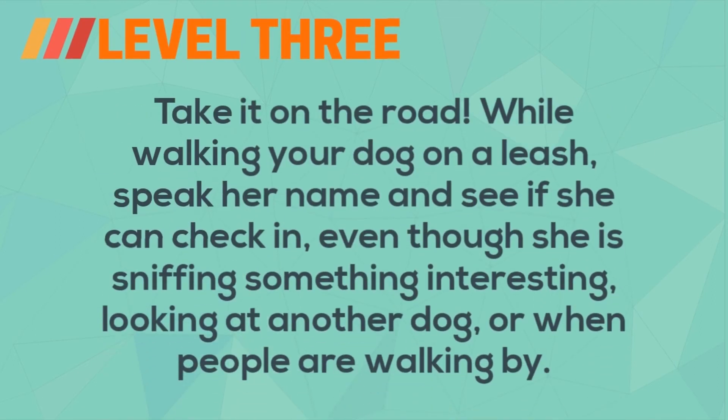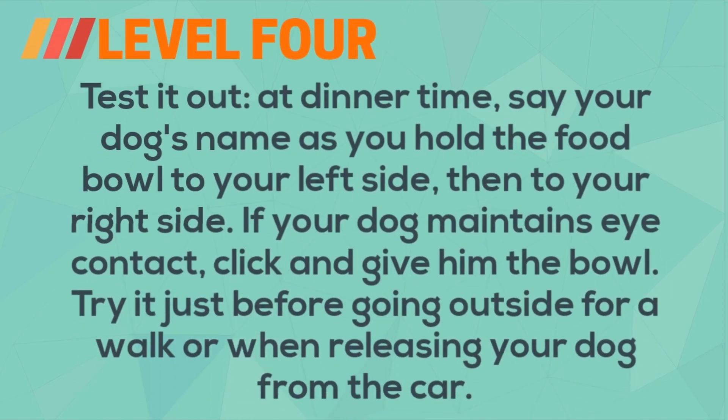Level three: take it on the road. While walking your dog on a leash, speak her name and see if she can check in even though she's sniffing something interesting, looking at another dog, or people are walking by. Level four: at dinner time, say the dog's name as you hold the food bowl out to your left side, then to your right side. If your dog maintains eye contact, click and give him his bowl. Try it just before going outside for a walk or when releasing the dog from the car.